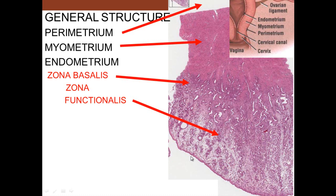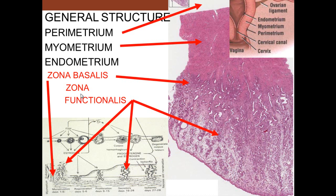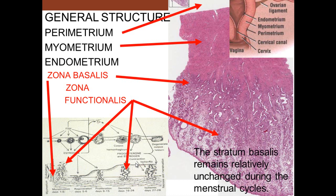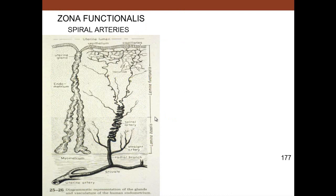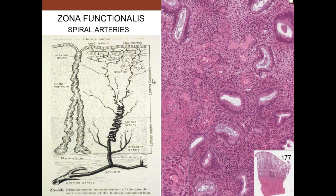From the basal layer all the way to the surface is the functional layer. The basal layer stays constant, but the functional layer changes with the menstrual cycle. Spiraling arteries run up through there, sending off arterioles that provide capillaries and nutrients to the functional layer. It is these spiraling arteries that stop flow, causing ischemia in the functional area, which causes menstruation to occur. Here we see the spiraling arteries as multiple coils of the same artery.